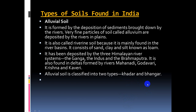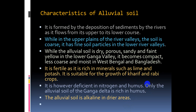Alluvial soil is classified into two parts: Khadar and Bangar. Alluvial soil is a very fertile soil. In drier areas, alluvial soil is dry, porous, sandy, and yellow in color. In the lower Ganga valley, it becomes compact, less coarse, and moist, as in West Bengal and Bangladesh. It is deficient in nitrogen and humus; only alluvial soil of the Ganga is rich in humus. It is also alkaline in drier areas.